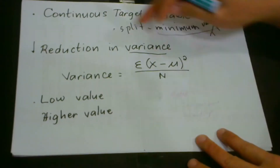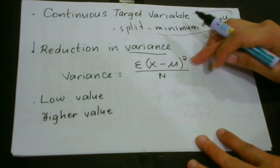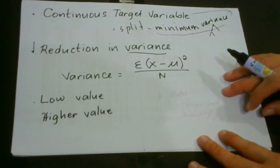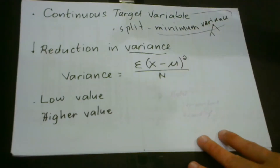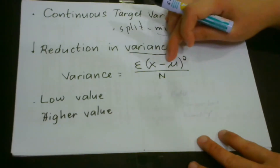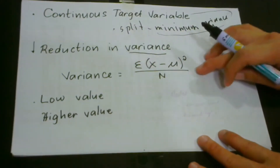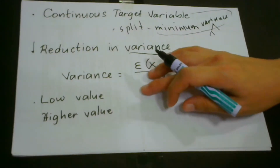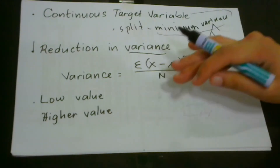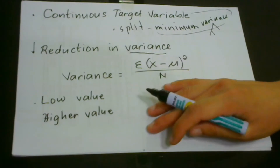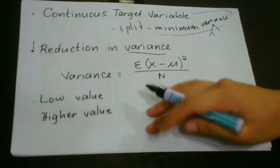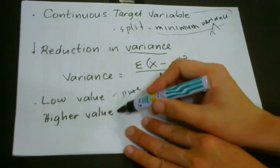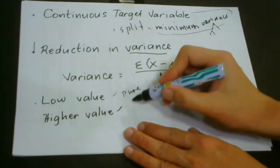For easy understanding, reduction in variance uses the same principle as variance in statistics. We compute the summation of the squared difference of a value x minus the mean, and then get the weighted average. With this calculation, we can identify the homogeneity of a certain node. If the variance is low, we have fewer, more homogeneous nodes. When the variance is higher, it means our node is impure.